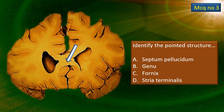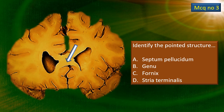Third MCQ. Here is a coronal section — this is a coronal section. There is an arrow mark flashing. Identify which part of the lateral ventricle this is, or which component related to the lateral ventricle this is.